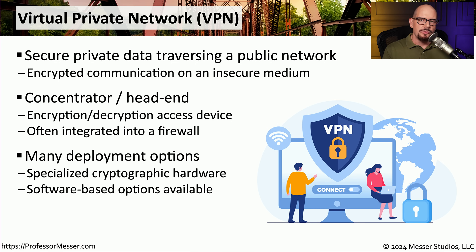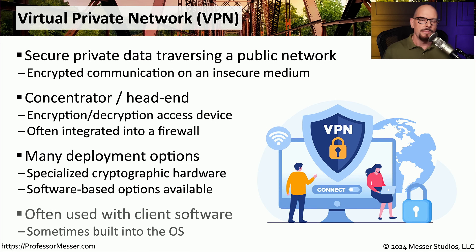Because of the encryption and decryption process required, we usually use a purpose-built appliance or piece of hardware that provides very high throughput and can support hundreds or even thousands of users simultaneously. But if you have a smaller network, you may not need a purpose-built appliance — there are many VPN concentrators that run as software on an existing operating system. You may need to install specialized software to use a manufacturer's VPN, although VPN software does ship with Windows, macOS, and Linux so you can connect to many different kinds of VPNs using that generic software.